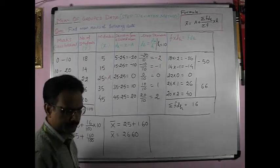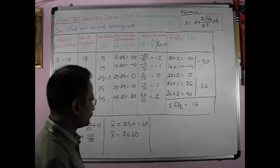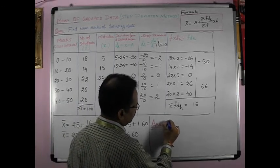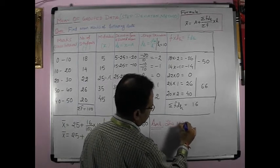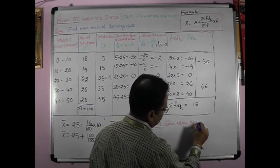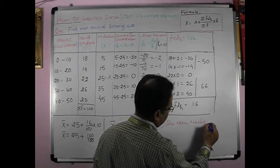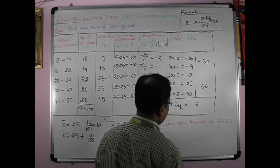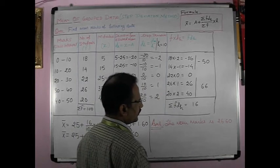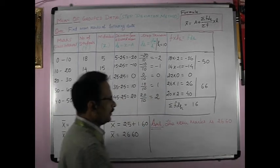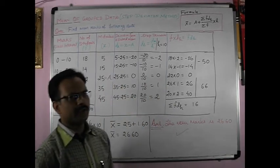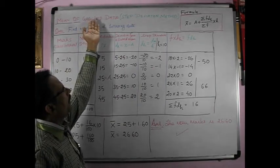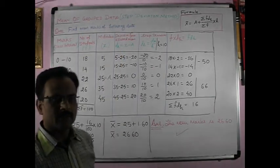x̄ is equal to 25 plus 1.6. x̄ is equal to 26.6. So the answer is 26.6. So in this way we can find out the mean deviation of grouped data by step deviation method. Thank you.